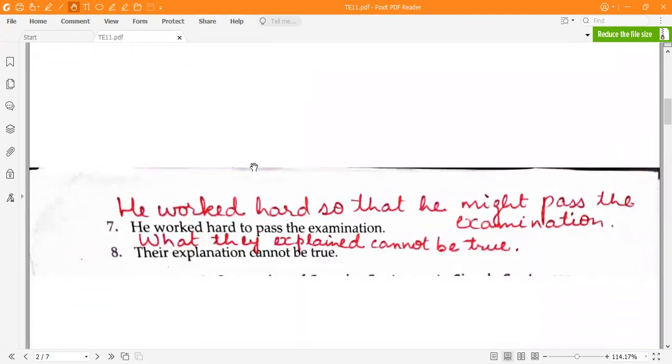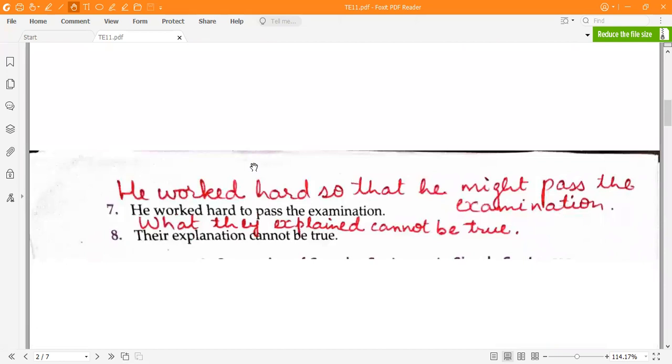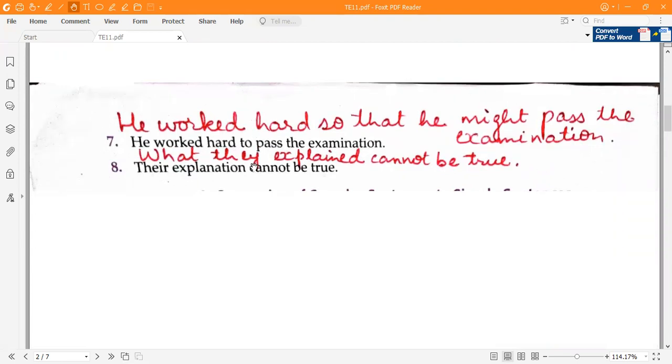Seventh one, he worked hard to pass the examination. He worked hard so that he might pass the examination. Eighth one, their explanation cannot be true. What they explained cannot be true.